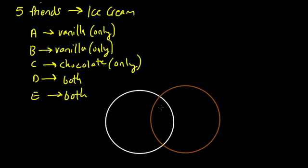And that, of course, is the both. People who want both flavors would go in here. So you put friends D and E in the middle here. And again, that intersection is both because the two categories are overlapping.